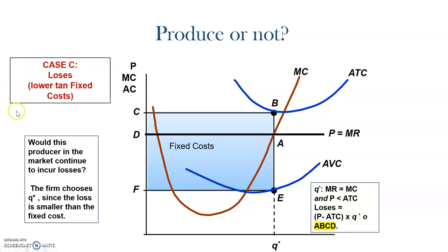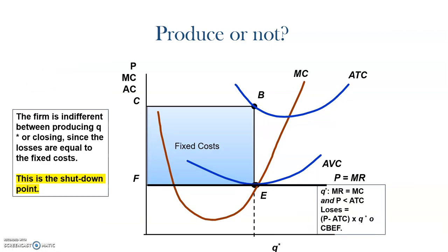Case C happens when the point where the price equals to the marginal cost is below the average total cost but over the average variable cost. It means that we are covering all our variable costs and some of our fixed costs, but not all of them. Then the firm will keep producing, at least, as it will be covering all the variable costs. The company will probably be expected to cover all the costs in the long term, and the losses equal to the area A, B, C, D, because this is the difference between the average cost and the average revenue. So the firm will keep producing.